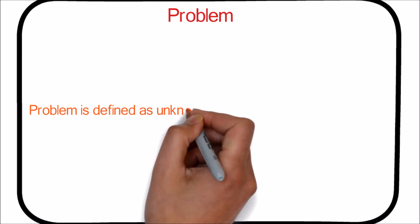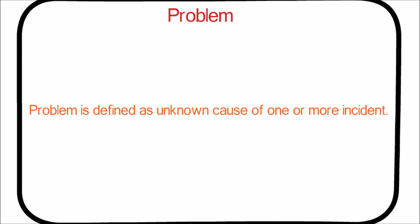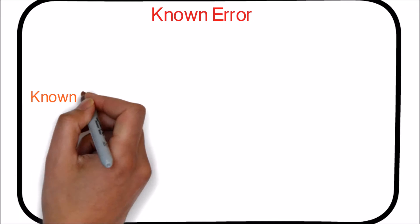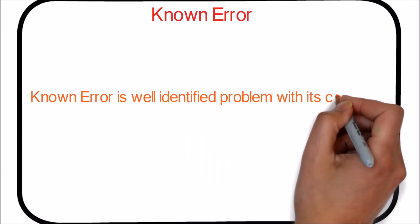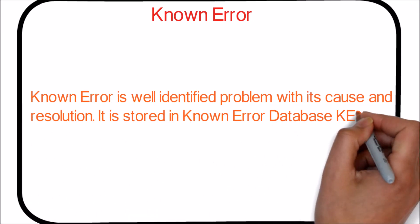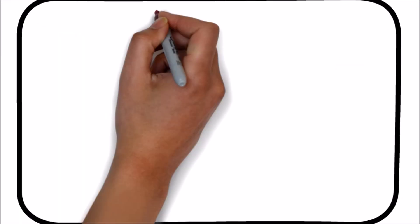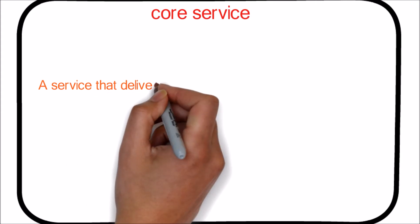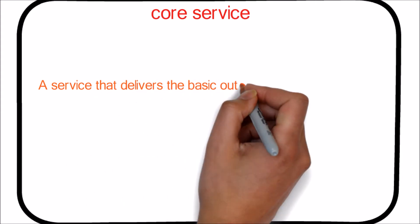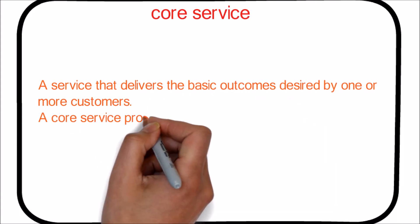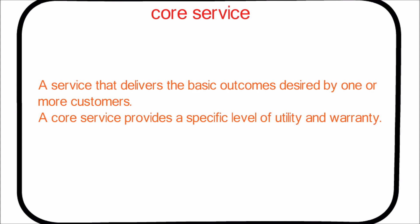A Problem is defined as the unknown cause of one or more incidents. A Known Error is a well-identified problem with its cause and resolution. It is stored in the Known Error Database, or KEDB. A Core Service is a service that delivers the basic outcomes desired by one or more customers, providing a specific level of utility and warranty.